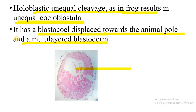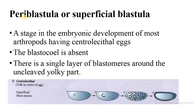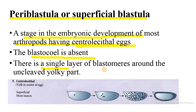The next type of blastula is periblastula or superficial blastula. It is the stage in the embryonic development of most arthropods or insects having centrolecithal eggs. The blastocoele is absent, and there is a single layer of blastomeres around the uncleaved central yolky part. An example is Drosophila.